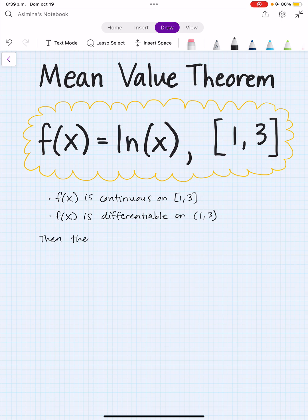Then the mean value theorem tells us that there is a number c in the interval (1, 3) such that f'(c) equals (f(3) - f(1)) / (3 - 1).